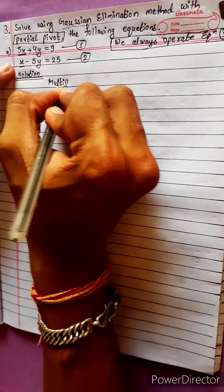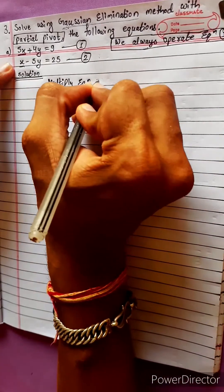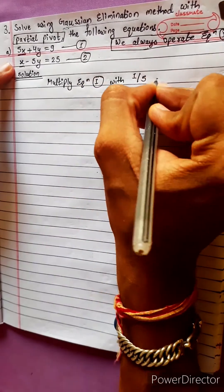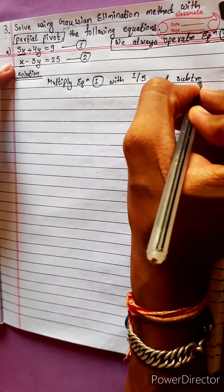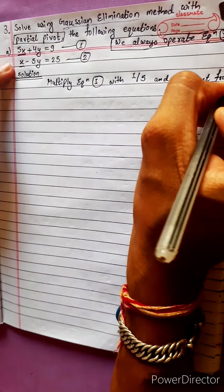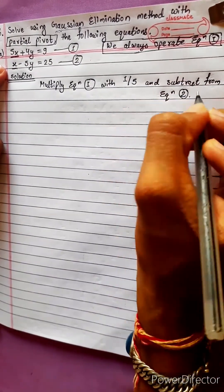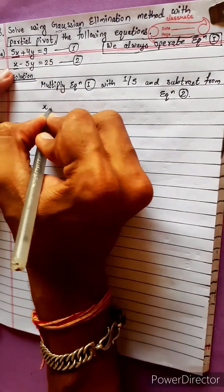Multiply equation 1 with 1/5 and subtract from second equation. First we write the second equation.